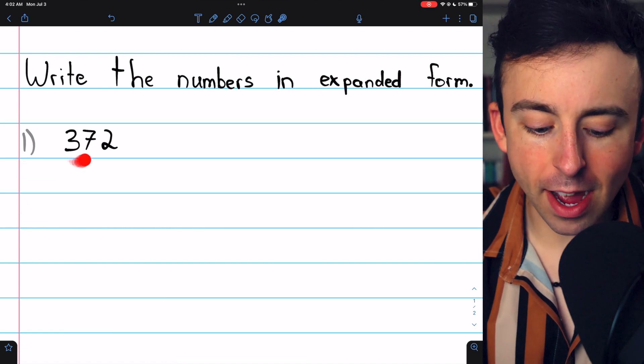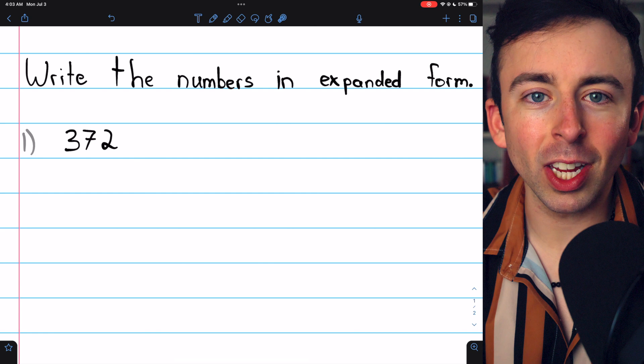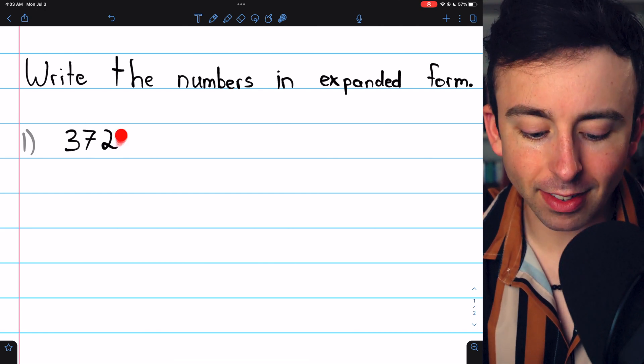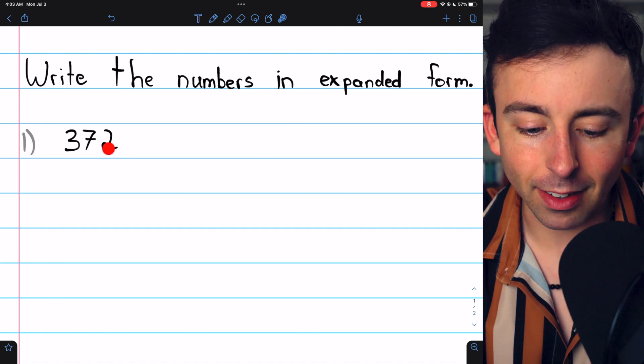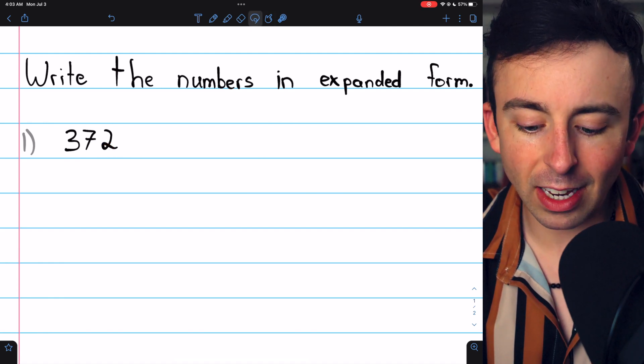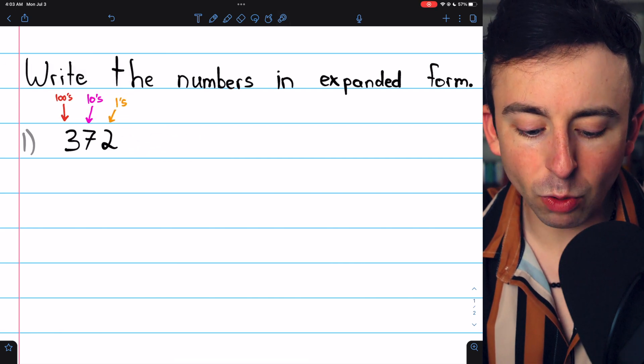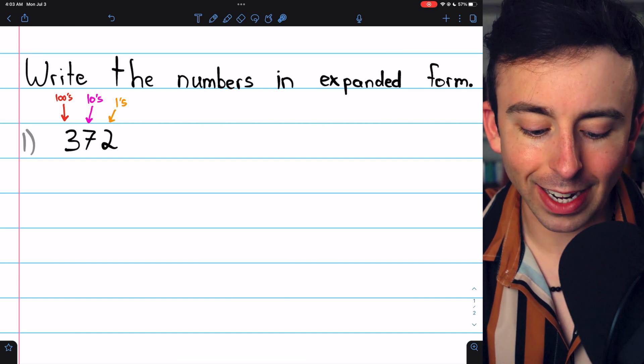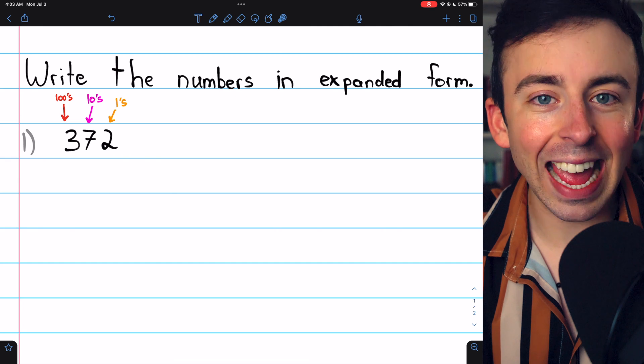Beginning with 372, you probably know that this 7 digit isn't really 7 because of where it is in this number. The digit furthest right is 2, and that's in what we call the 1's place. But the 7 is 1 place over to the left, and that's the 10's place. So it's not really 7, it's 7 10's.